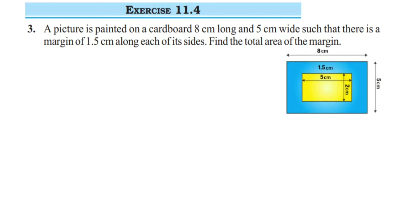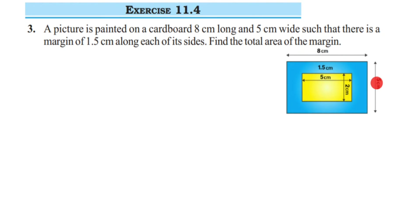Here is a question on exercise 11.4, third question. The question is: a picture is painted on a cardboard 8 centimeter long and 5 centimeter wide, such that there is a margin of 1.5 centimeter along each of its sides. Find the total area of the margin. So here is a cardboard of length 8 centimeter and width 5 centimeter, with a picture inside leaving 1.5 centimeter from all sides.